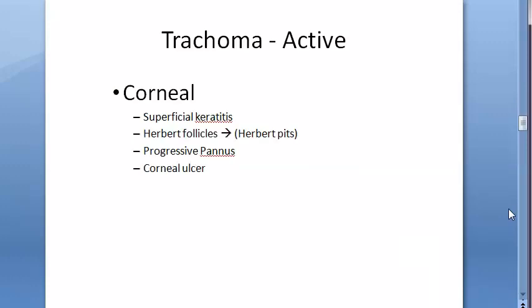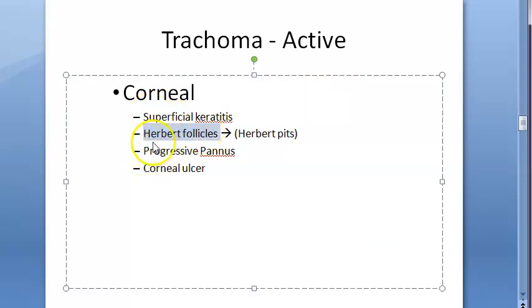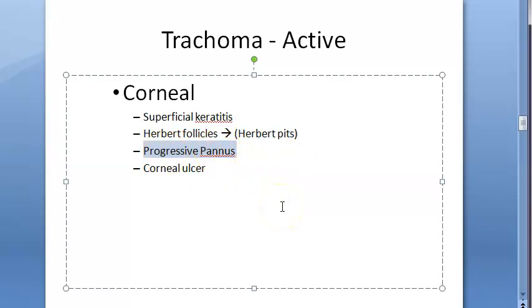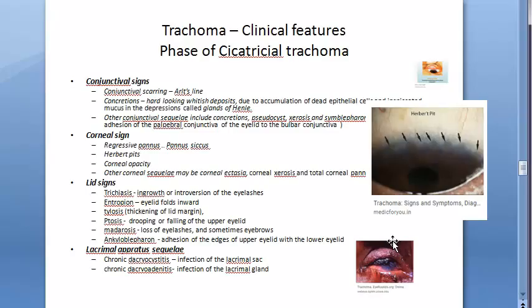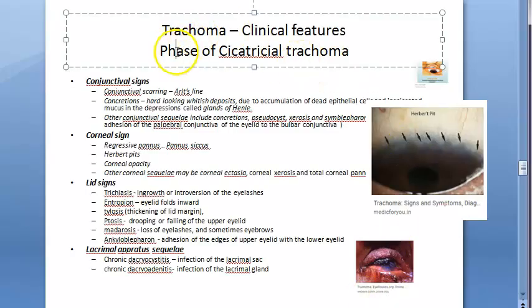Corneal signs in active trachoma include Herbert's follicles, which later become Herbert's pits in regressive trachoma. In active trachoma there is progressive pannus; in regressive trachoma, regressive pannus. Additional active signs include corneal ulcer and superficial keratitis.